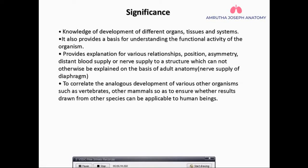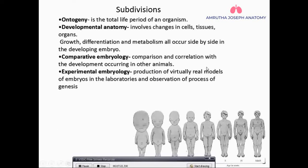Embryology also helps correlate analogous development of various other organisms such as vertebrates and other mammals — we compare their development with ours. For example, a major difference between apes and humans is the orientation of the thumb. Why is it different, and there are other non-functional structures in humans whose developmental origin can be traced through embryology.